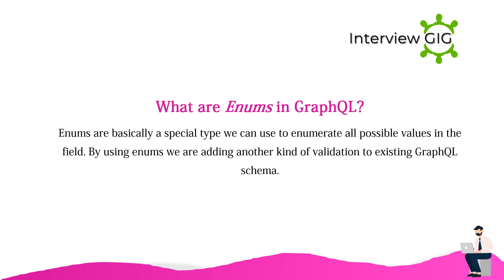What are enums in GraphQL? Enums are a special type used to enumerate all possible values in a field. By using enums, we are adding another kind of validation to an existing GraphQL schema.